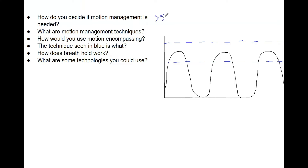If there is motion greater than five millimeters — according to TG76, absolutely need to know that — they recommend that you use some type of motion management. If it's less than that, you don't have to worry about it. You can use a 4D CT to measure this and then use either the MIP or the average. I have a different video on that, so refer to that so we don't get too much in the weeds.